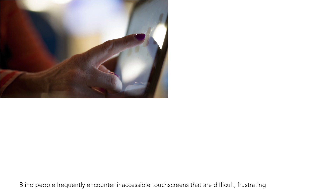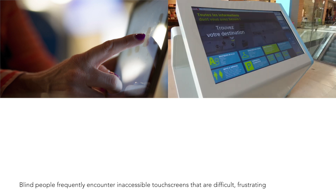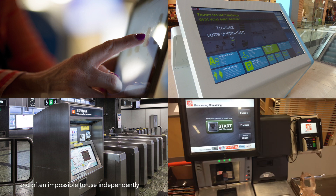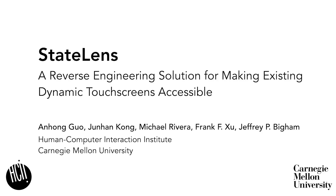Blind people frequently encounter inaccessible touchscreens that are difficult, frustrating, and often impossible to use independently. We present Statelense, a reverse engineering solution for making existing dynamic touchscreens accessible.